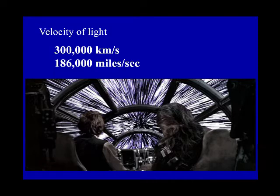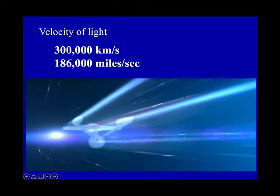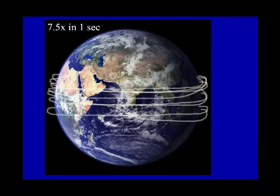The velocity in this case is the velocity of light, c, and it is the fastest thing in the universe according to Einstein's theory of relativity. It is a constant for all observers — 300,000 kilometers per second, or 186,000 miles per second. C is very fast.